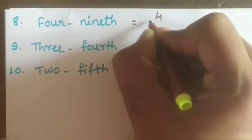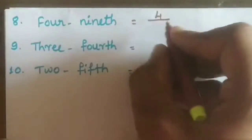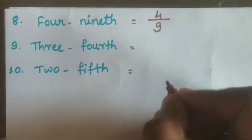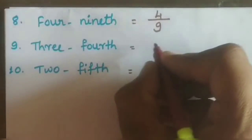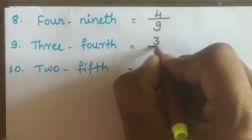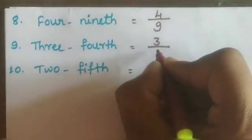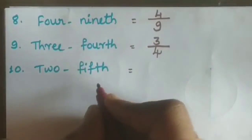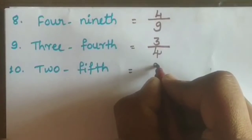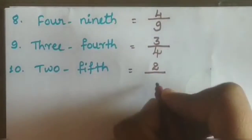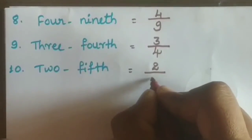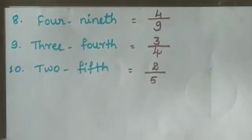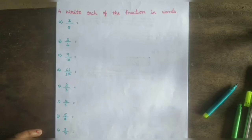Four ninths — four in numerator, nine in denominator. Three fourths — three in numerator, four in denominator, that is three by four. Two fifths — two in numerator, five in denominator, that is two fifths.